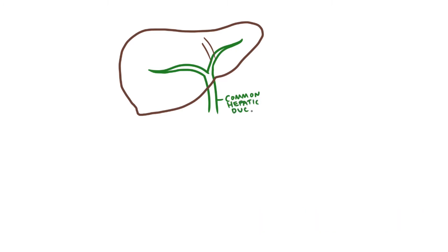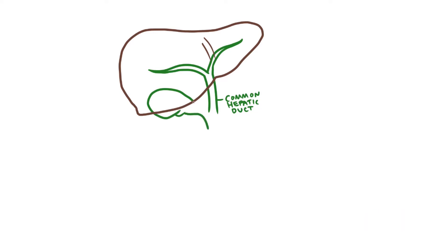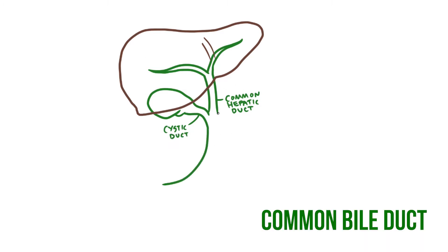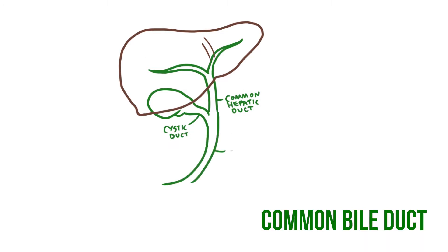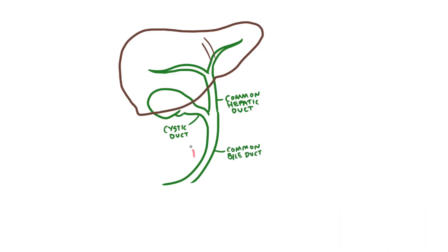Once the bile is out of the liver it needs to get into the gallbladder, and it does that by travelling along a tube known as the cystic duct. The cystic and common hepatic ducts then form a single common bile duct that drains into the second part of the duodenum. Here the bile can mix with semi-digested food inside the gut, helping to emulsify fats and neutralise acid.